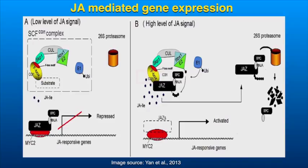JA-isoleucine binds to its receptor called COI1, which is an F-box protein in a ubiquitin ligase E3 complex called SCF-COI1. This binding changes the conformation of COI1 such that it shows an affinity for its substrate, the JAS protein, and binds to it. Subsequently, E3 ligase ubiquitinates the JAS protein and marks it for proteasome-mediated degradation.